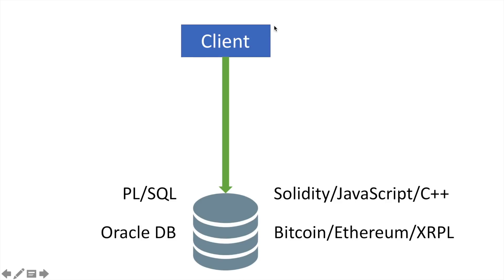This database is the backend part. On the front-end side, we have some client software which users like you and me use to create a connection to the database. In the case of blockchain, it is typically a wallet, and this wallet or client software allows you to monitor transactions, create and receive transactions. Many blockchains have their own programming languages like Solidity, JavaScript, C++, Java, and so on.